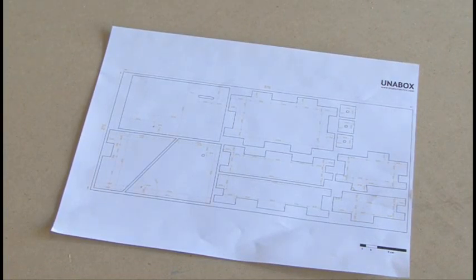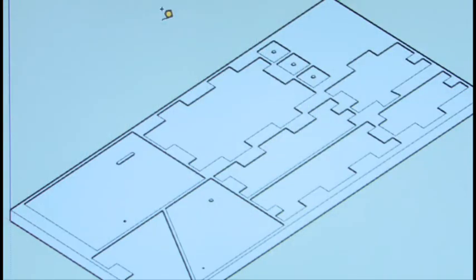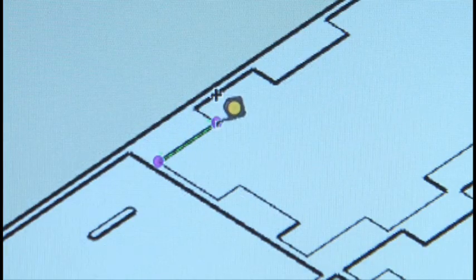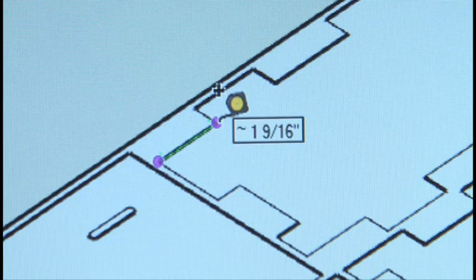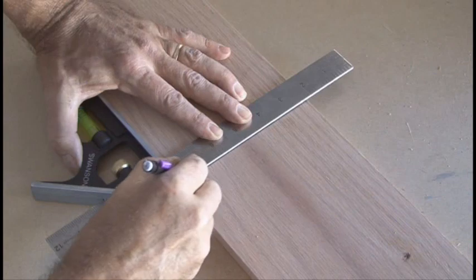Since there really aren't any dimensions on the plans, I used Google SketchUp because there's a SketchUp file at the download link, and then I used a little tape measure to come up with all of the dimensions for the Unibox. We'll start by measuring out all of our pieces and then cutting them out.